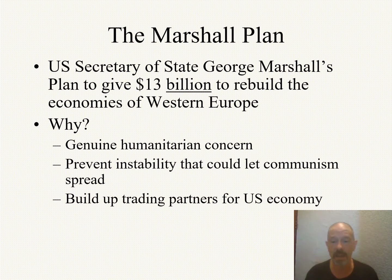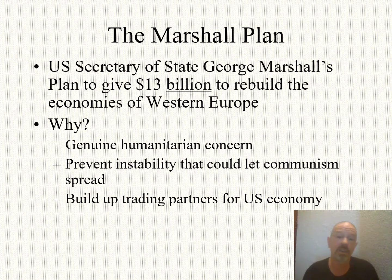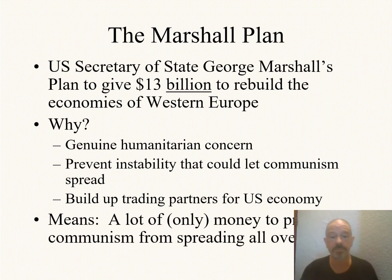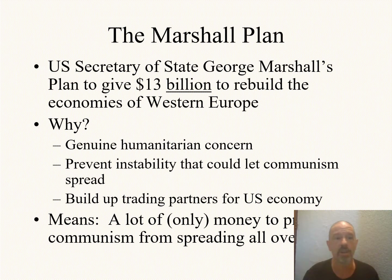Notice what we're doing — it's still not about using military power, but it is about using a lot of money to stop communism from spreading anywhere in Europe. And this is where we are by 1948. Not only is Europe divided between East and West — Czechoslovakia, Poland, Hungary, Romania, Yugoslavia — these are all part of Eastern Europe's so-called satellite nations that revolve around the Soviet Union.